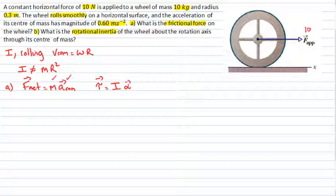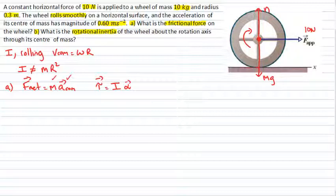Let's put forces on the diagram. We have the applied force of 10 newtons acting to the right, a weight force mg acting down through the center of mass, and a normal force acting upward through the center of mass directly above the contact point. If these were the only three forces, the wheel wouldn't rotate — they can't provide a torque about the center of mass since the perpendicular distance is zero. So there must be another force causing clockwise rotation: that's the friction force, which points to the left. Its magnitude is what we want to find.